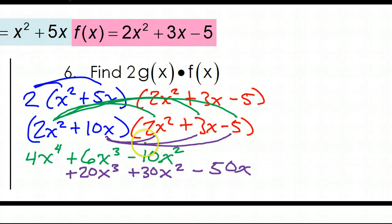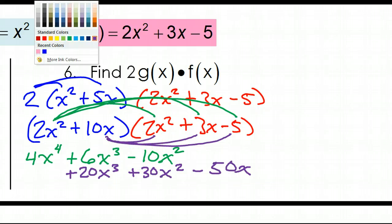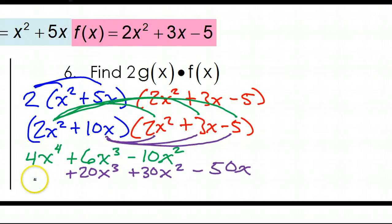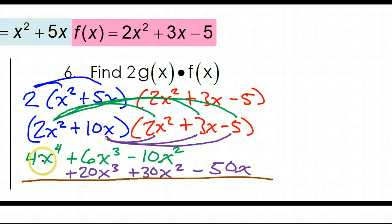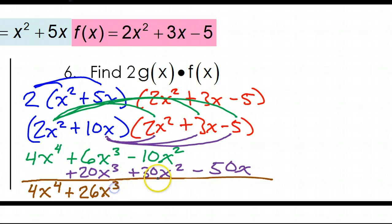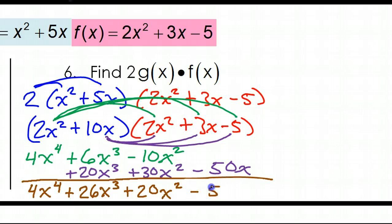Now combine like terms. 4x to the 4th has no like terms, so bring that down. 6x cubed and 20x cubed make 26x cubed. 30x squared and negative 10x squared make 20x squared. And just bring down negative 50x. So this should be your answer for number 6.